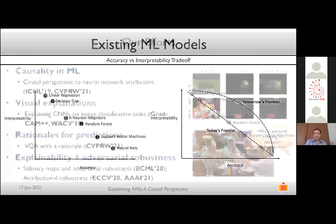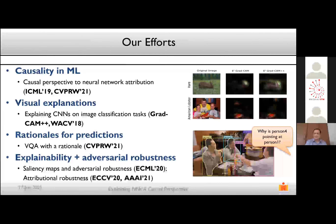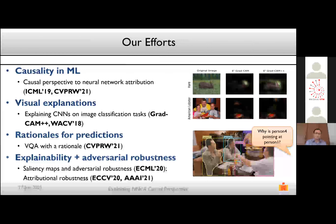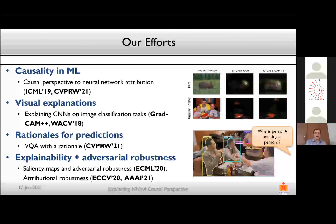With that brief introduction, I'll talk about the different things our group at IIT Hyderabad has been doing, then focus on one for the rest of this talk. We've been looking at causal perspectives to explainable neural networks. We've also been looking at visual explanations — when using CNNs for image classification, where was the model looking while making a prediction? We've also been looking at generating human-understandable rationales for predictions, such as explaining that an image is a cat because it has four legs, whiskers, a tail, and fur.